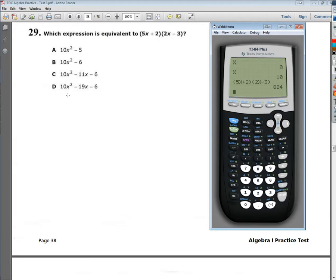They just did quadratic factoring. So I'm going to type in my answer that I think it is. That's 10x squared minus 11x minus 6 and end up with 884. So my question and answer are the same number. So it's the right answer.